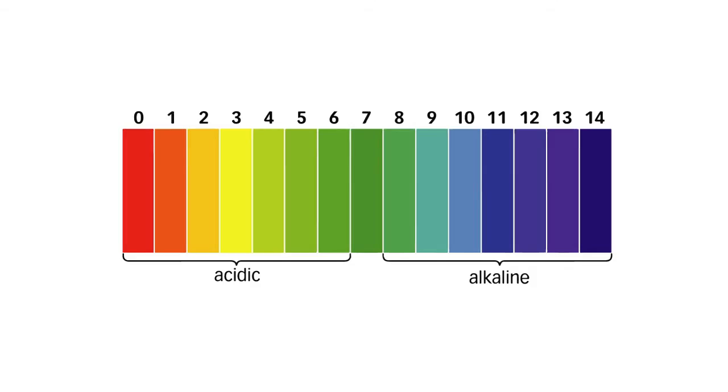This is the pH scale, which ranges from 0 to 14. And this is us. This is where the pH of the human body roughly lies, between 7.35 and 7.45.